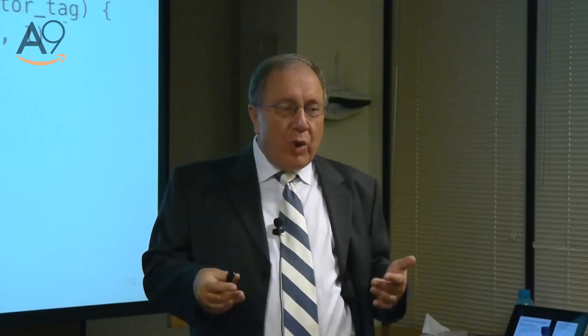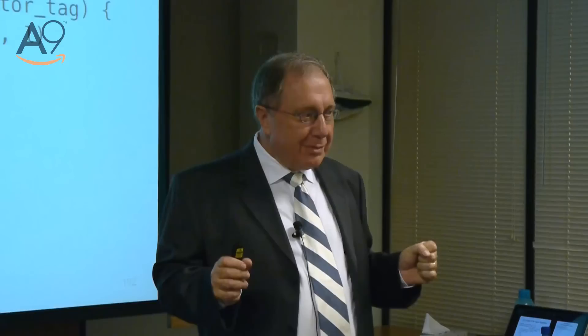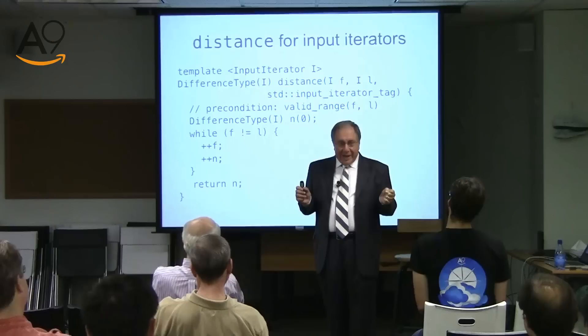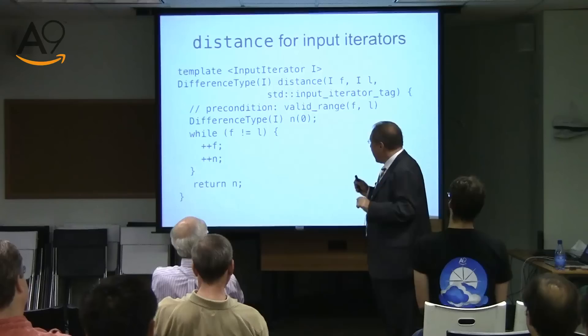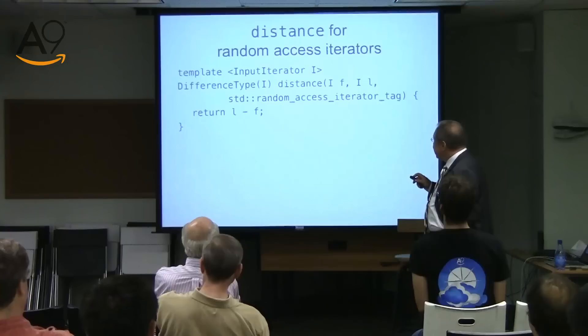What is the meaning of a valid range? Let's distinguish implementation from meaning. The meaning is very simple: the range is valid if you could get from its beginning to its end by doing successor.